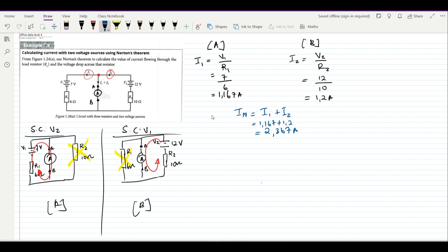When you calculate the Norton resistance, you are short circuiting all the voltage sources which are there in the circuit. If we can redraw that, this is the circuit that will be left with.